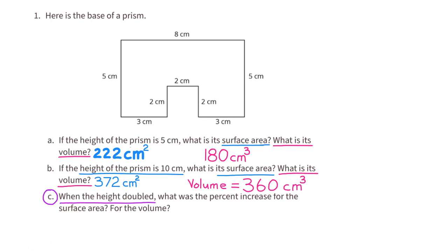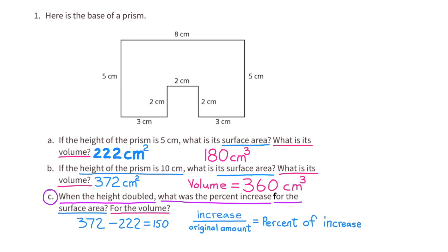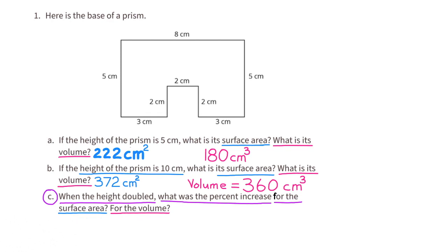Part C: When the height doubled, what was the percent increase for the surface area? For the volume, the larger surface area minus the smaller surface area will equal the increase. 372 minus 222 is 150. They're asking what was the percent increase. We need to figure out what percent 150 is of 222. You can do that by dividing: 150 divided by 222 shows that 150 is approximately 67.6% of 222. That was the percent increase for the surface area.